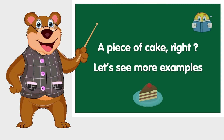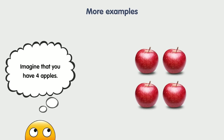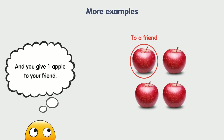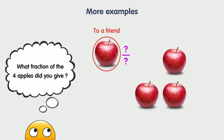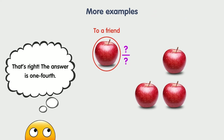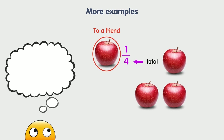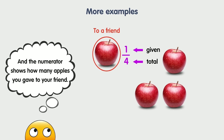Easy, right? Let's look at another example together. Imagine that you have four apples and you give one apple to your friend. What fraction of the four apples did you give? That's right — the answer is one fourth. The denominator represents how many apples you had, and the numerator shows how many apples you gave to your friend.